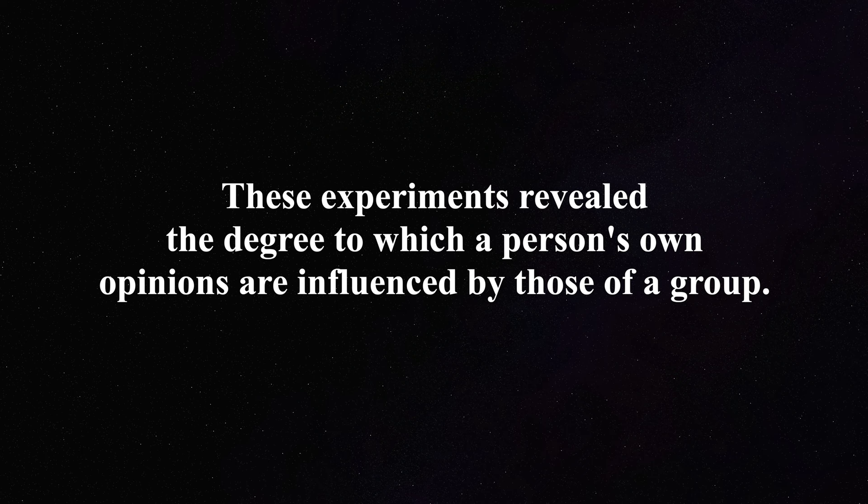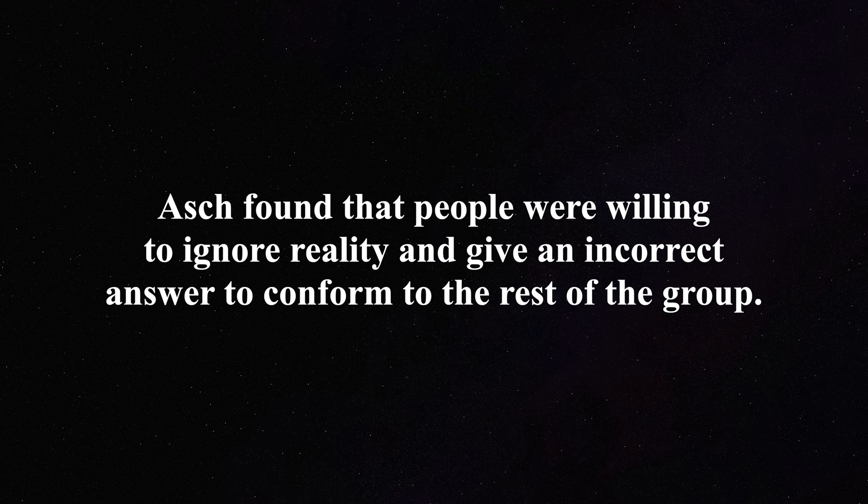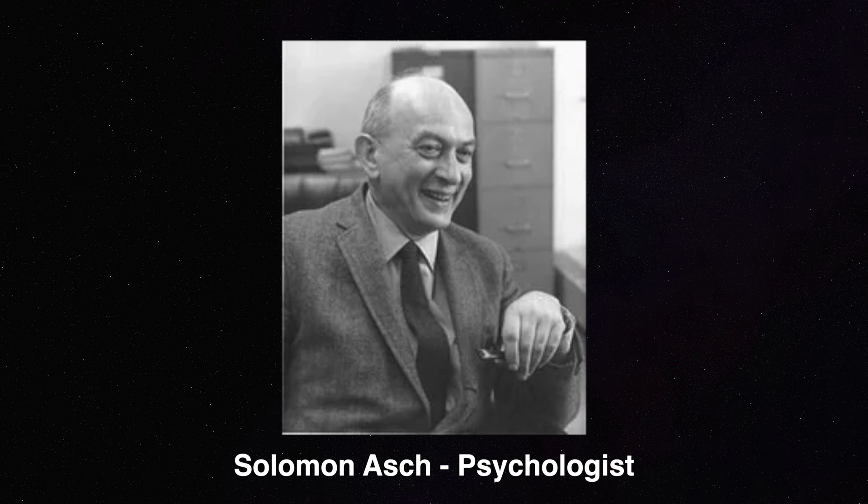Since we're talking about conformity, the first very striking and important example is Solomon Asch's experiment. These experiments revealed the degree to which a person's own opinions are influenced by those of a group. Asch found that people were willing to ignore reality and give an incorrect answer in order to conform to the rest of the group. Using a line judgment task, Asch put a naive participant in a room with seven confederates. The confederates had agreed in advance what their responses would be when presented with the line task.